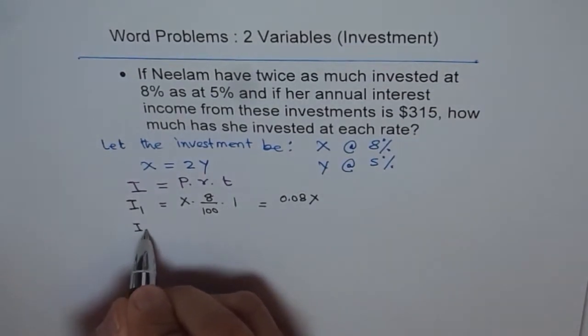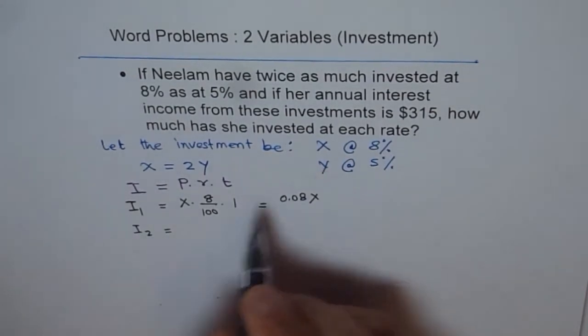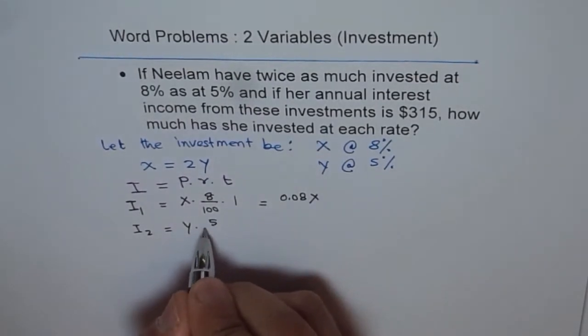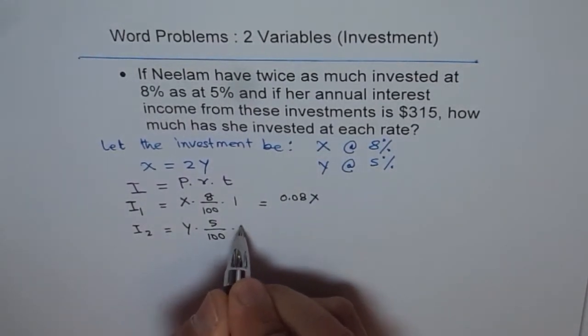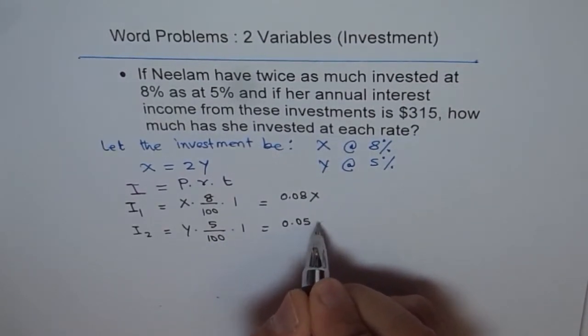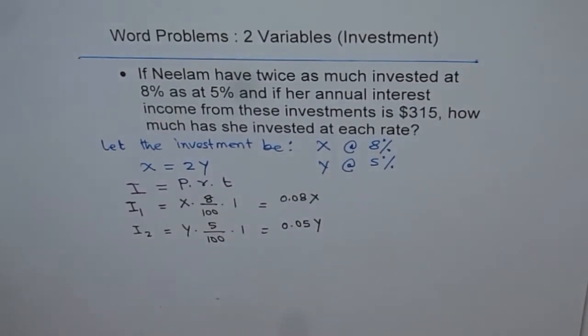Now, income 2 is Y times 5%. That means 5 over 100 times 1. So it is 0.05 times Y. This is our incomes from two different investments.